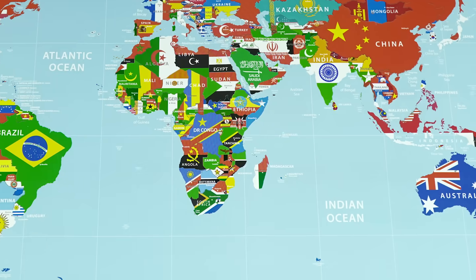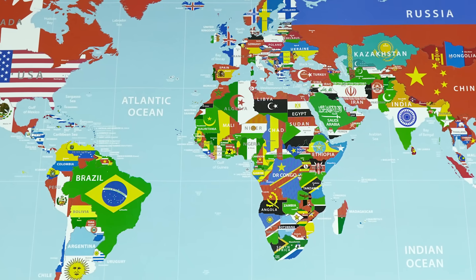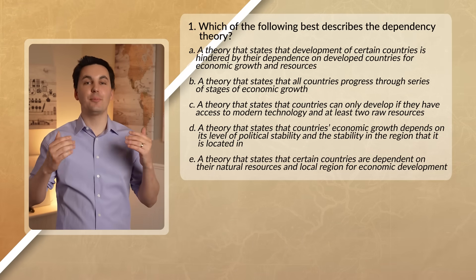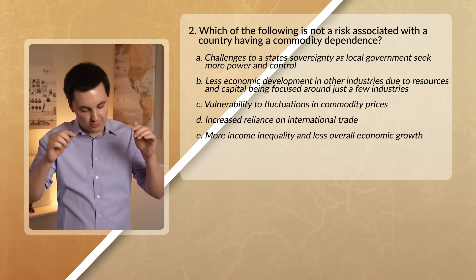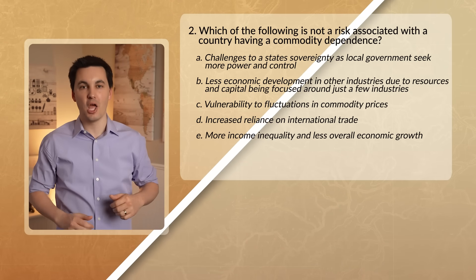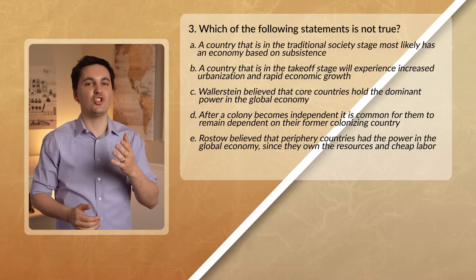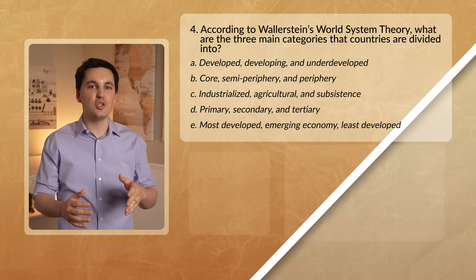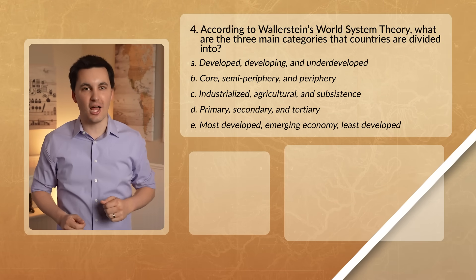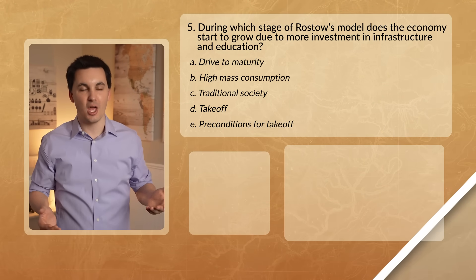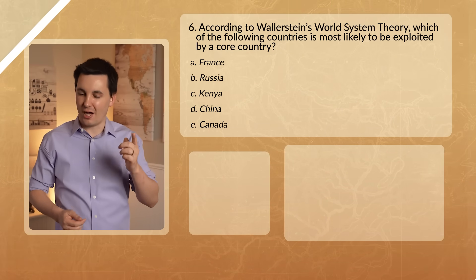So we can see that the world today is more connected than ever before, and this global trade has real-life impacts on countries around the world. Now it's time to practice what you've learned — answer the questions on the screen, and when you're done, check your answers down in the comment section below. Also, make sure to hit that subscribe button and check out my ultimate review packet for more help with your AP Human Geography class. It is a great resource that'll help you get an A in your class and a 5 on the national exam. As always, I'm Mr. Sin — thank you so much for watching, and I will see you next time.